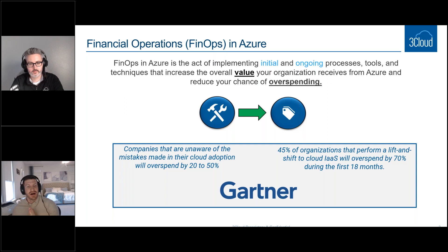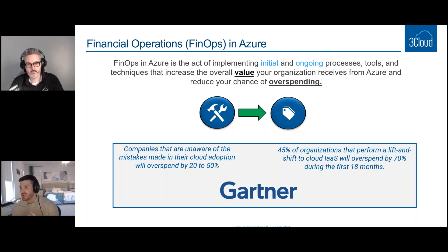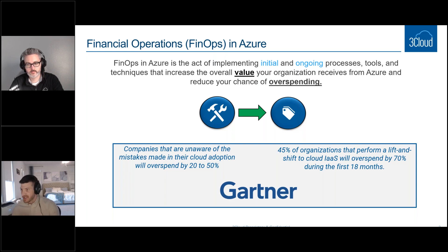Gartner notes that clients who make a mistake in their cloud adoption are generally unaware of it, and will overspend by around 20 to 50%. When you migrate to the cloud and perform a lift-and-shift, you're going to overspend hugely in the first 18 months. With our 3Cloud360 tool, we show clients what it looks like to move to the cloud — good, better, best — in terms of how much you can overspend if you're not aware of these pitfalls.